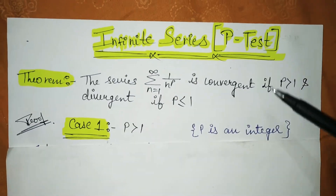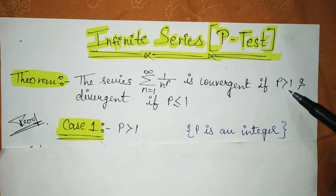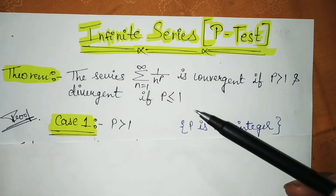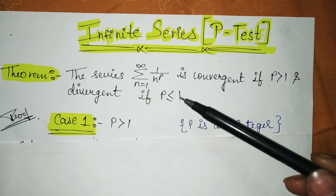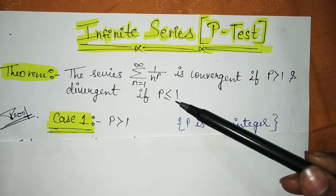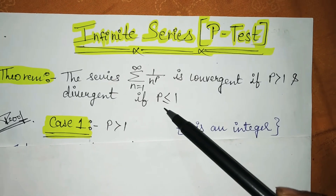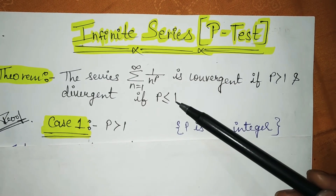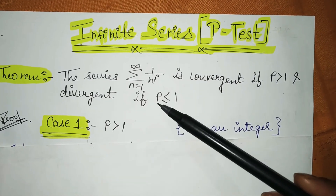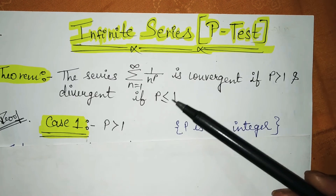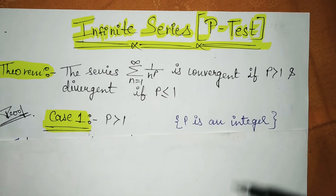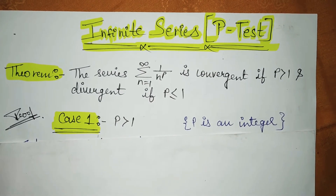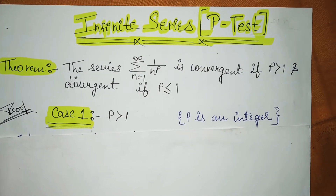See this condition: P is greater than 1 — this is the first condition. And here P is less than or equal to 1, which is not just one condition but two conditions: P is less than 1 and P is equal to 1. So we will see three conditions in this P-test. Let's start with case one.